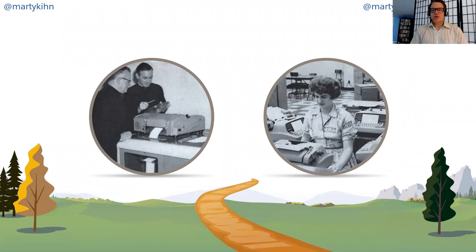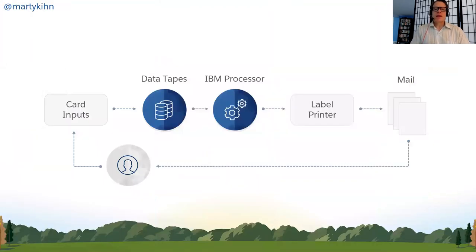It worked by taking punch cards — the way you spoke to computers in those days. Punch cards were input at a rate of about 500 an hour, and it could output 1,000 mailing labels. Those typewriters you see on the right were automated, supervised by people, and capable of outputting about 800 custom lines of letterhead a minute. So there were a lot of different letters put out, customized to the people in the flock.